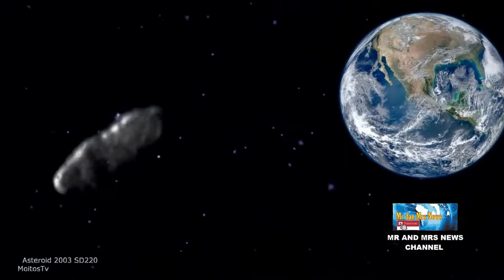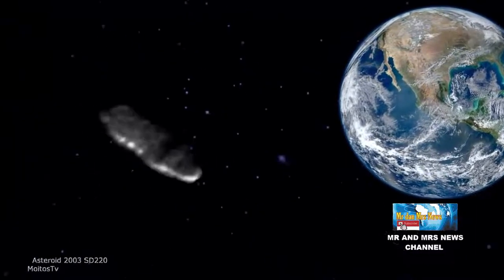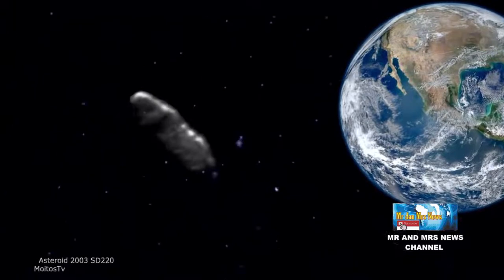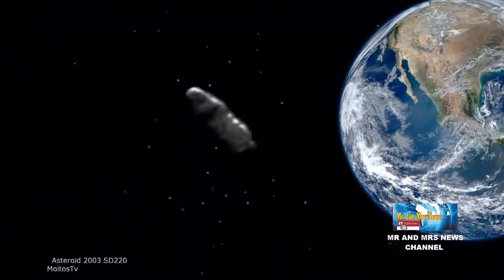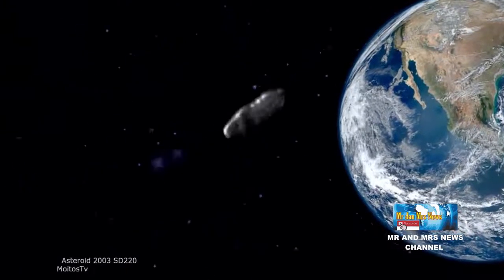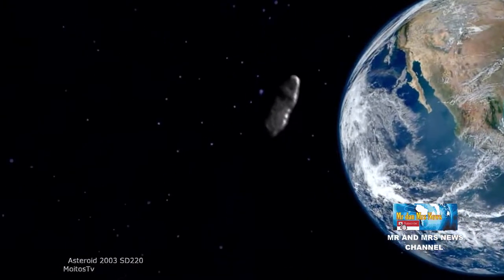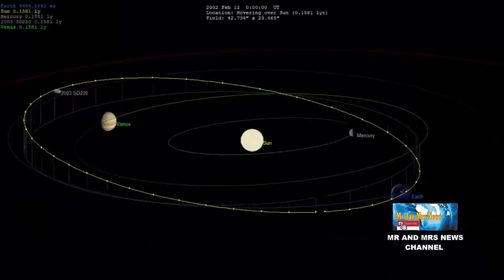Namun, pengamatan yang dilakukan pada tahun 2015 oleh Observatorium menunjukkan bahwa benda langit itu bisa jauh lebih besar dari prediksi. Mereka menyebut sebenarnya asteroid 2003 SD220 yang berbentuk mirip ubi jalar ini memiliki panjang 2 kilometer.